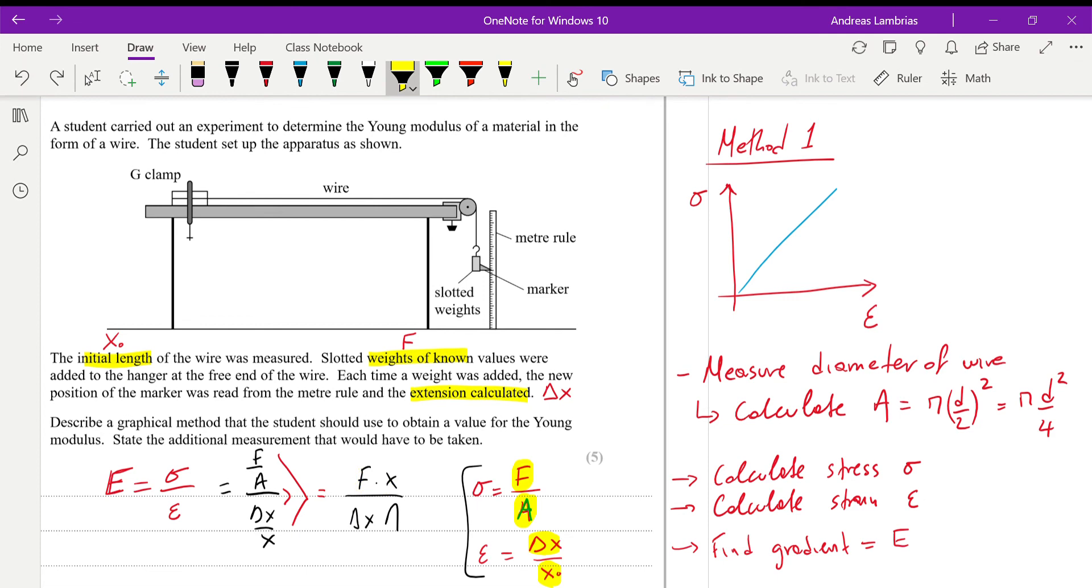So, for method two, I'm just going to erase some of these things over here. So, for method two, what do we have? We're going to plot the weight or the force against the extension.